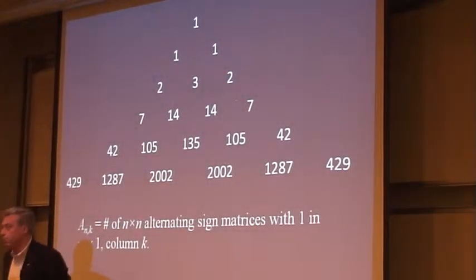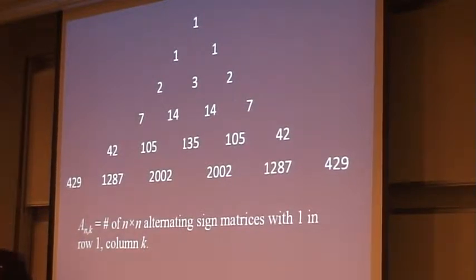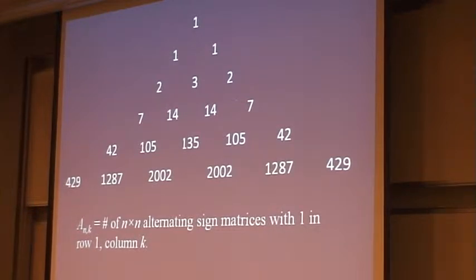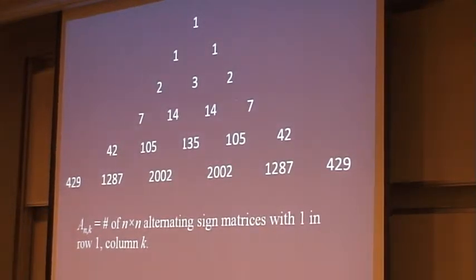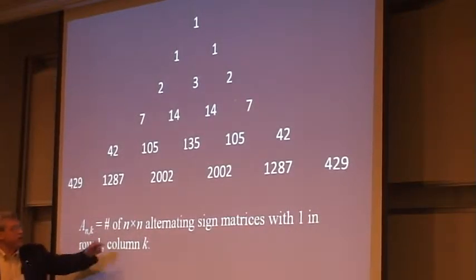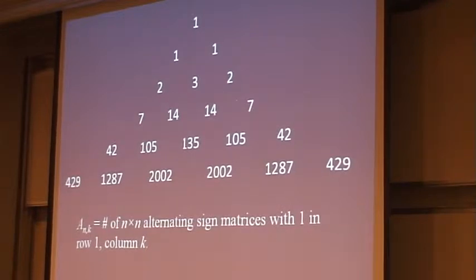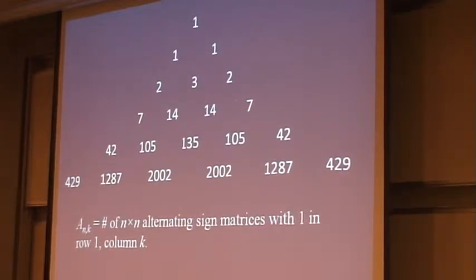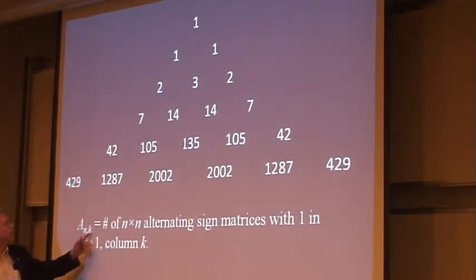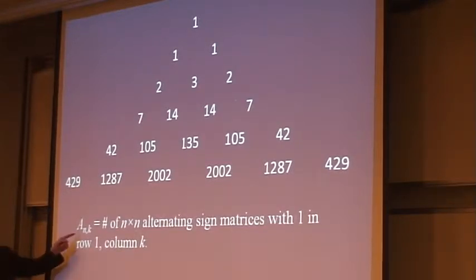The basic problem was to count the number of n-by-n alternating sign matrices. Dave Robbins, as he explained in an Intelligencer article around 1989–1990, noted that it's very difficult to take just a sequence of numbers and figure out what's going on — it's much easier if you can break it into a two-dimensional array. What he did was take each set of n-by-n alternating sign matrices and subdivide it into n subsets: a(n,k) being the number of n-by-n alternating sign matrices in which the one in the top row occurs in the k-th column. He succeeded even back in 1980 in calculating these all the way down to the 20th row.